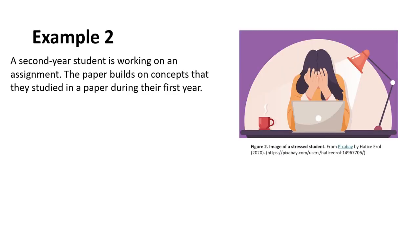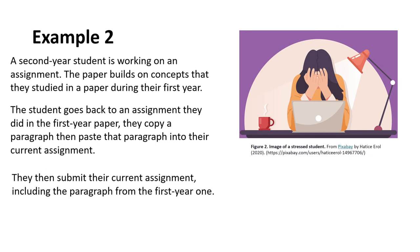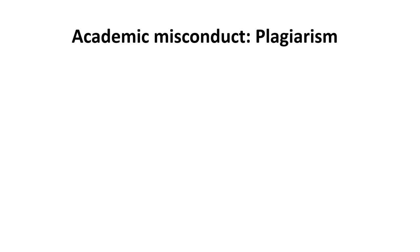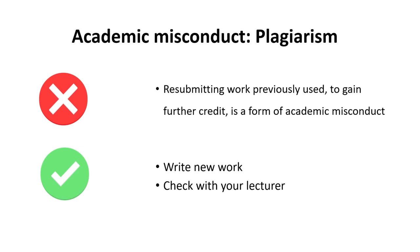Example two: a second year student is working on an assignment. The paper builds on concepts they studied in a paper during their first year. The student goes back to an assignment they did in the first year paper, copies a paragraph, then pastes that paragraph into their current assignment and submits it. This is academic misconduct because it is a kind of self-plagiarism. Resubmitting work previously used to gain further credit is a form of academic misconduct. You should write new work and check with your lecturer if you have any problems.